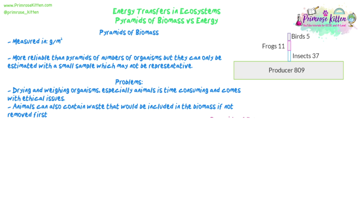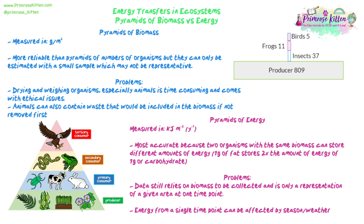The problems with pyramids of biomass are that drying and weighing organisms — especially animals — is time consuming, and catching and killing animals comes with ethical issues. Animals can also contain waste in their digestive systems that would be included in the biomass reading unless removed. We could also use energy calculations from the biomass to make pyramids of energy, expressed in kilojoules or joules per metre squared per year. These are the most accurate, because two organisms with the same biomass could store different amounts of energy.